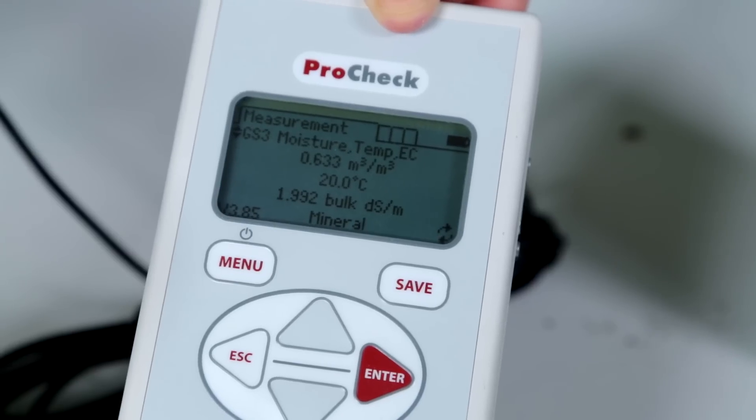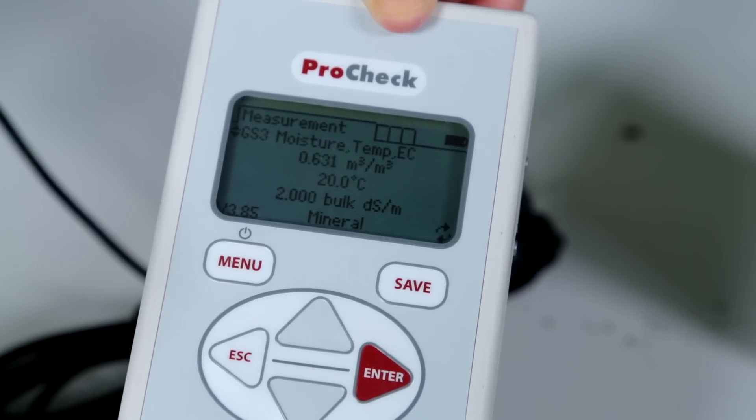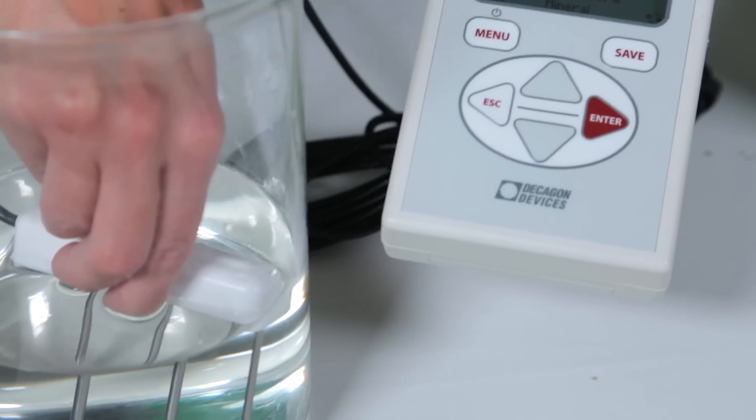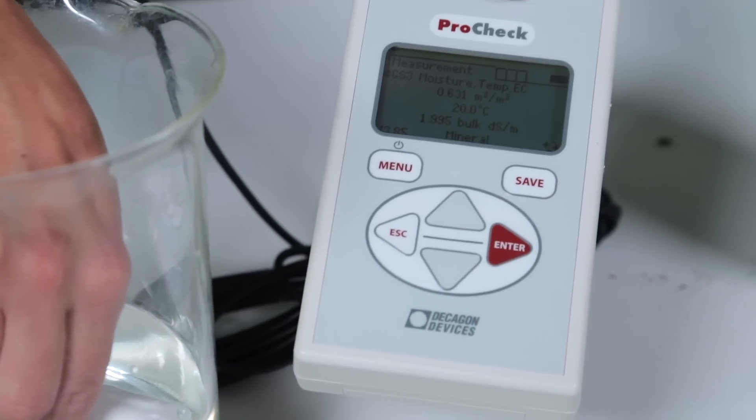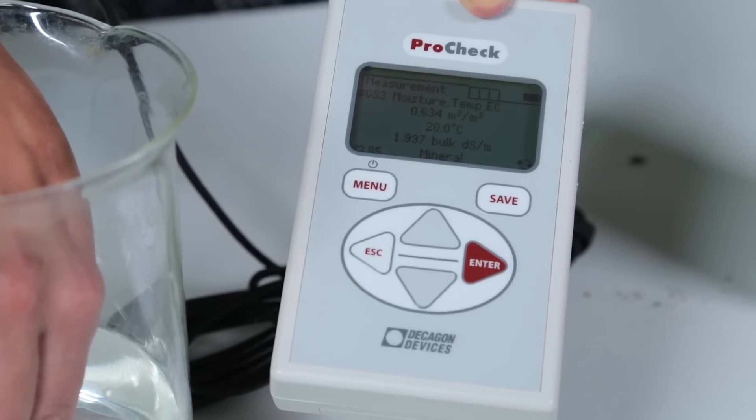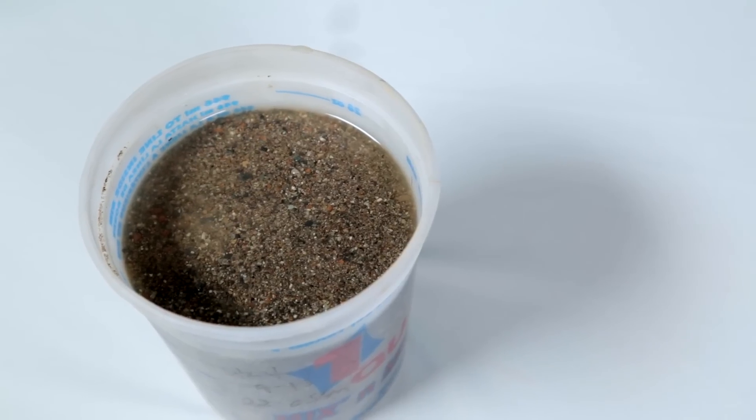Our little rule of thumb would have said that it should have read 1.4 deci-siemens per meter. But remember, the relationship between salinity and EC is only approximately linear.